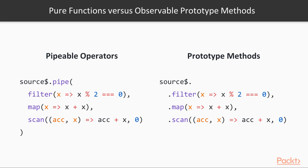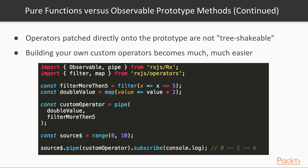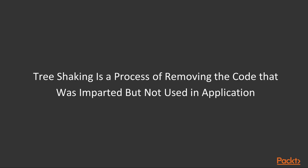You may ask why? Operators in a prototype are not tree-shakable by tools like Rollup or Webpack. If you didn't know that, tree-shaking is a process of removing the code that was imported but not used in an application. So the final bundled project JavaScript file size becomes less.